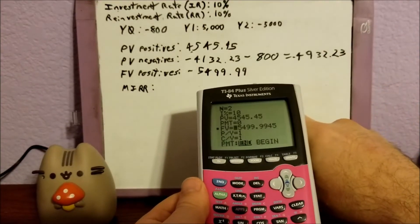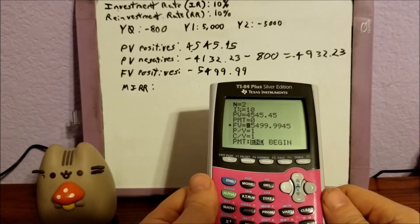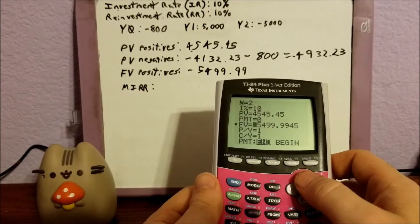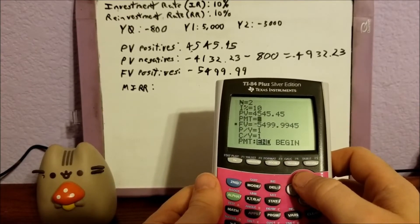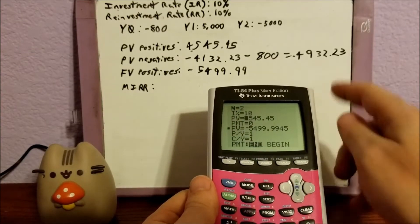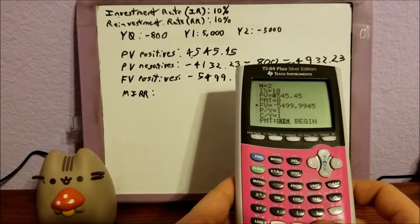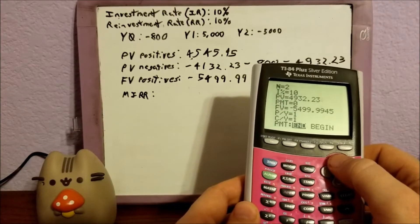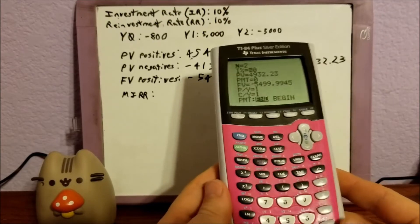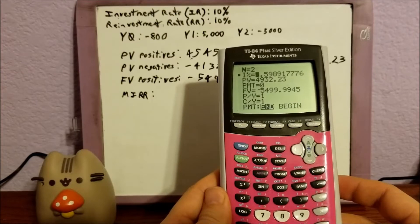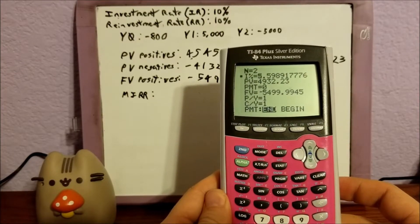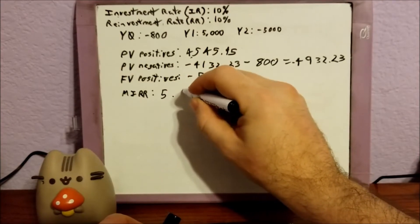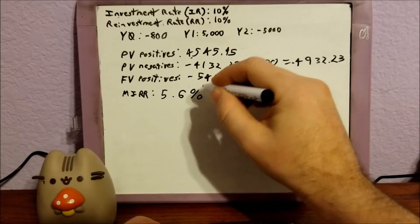Both values we've written down are negatives, but for the calculator we have to change one of them to a positive — it doesn't matter which one. So we leave the future value as negative 5,499.99, and we take our present value of the negatives and plug that in as a positive: 4,932.23. We go up to our interest rate, hit alpha and solve, and that gives us our MIRR: 5.59%, or about 5.6%.